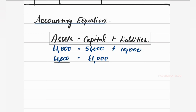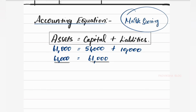Working note for mark scoring: Assets = Capital + Liabilities. Assets ₹61,000 = Capital ₹51,000 + Liabilities ₹10,000, that is ₹61,000 = ₹61,000. Accounting equation is done.